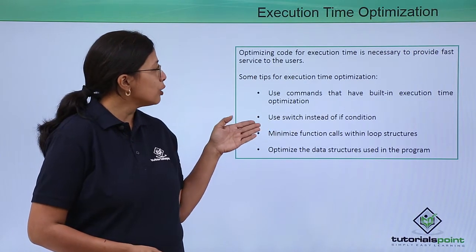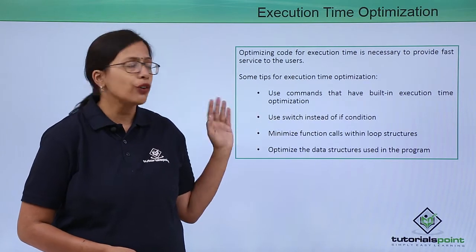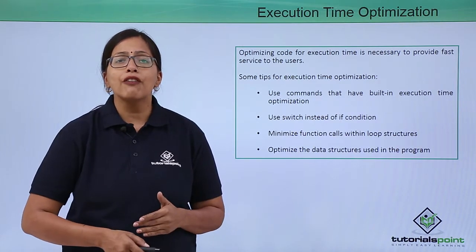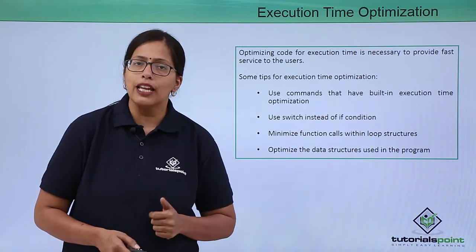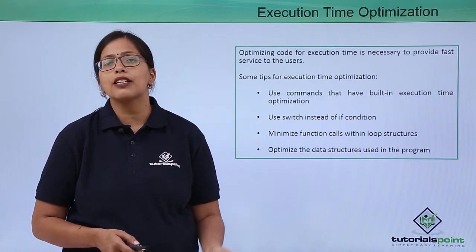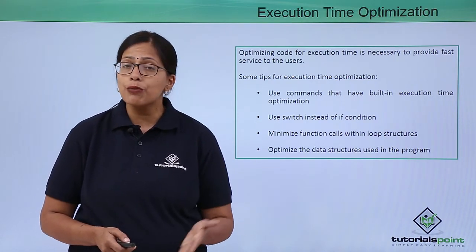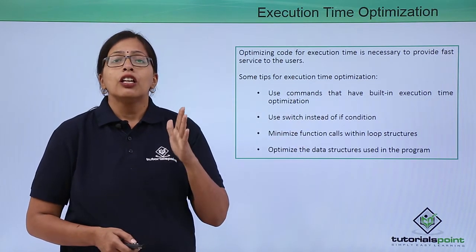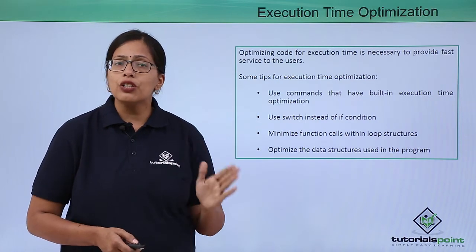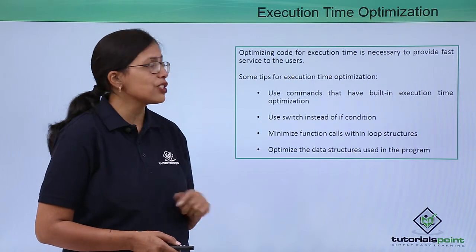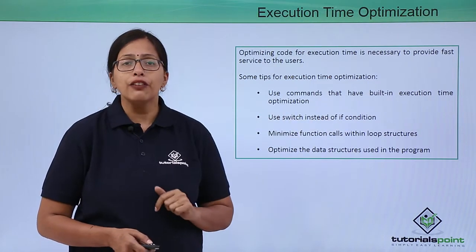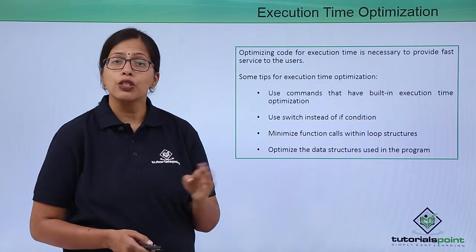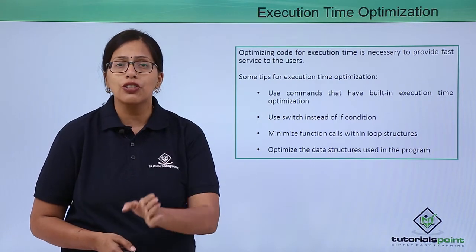To optimize code for execution time, first and foremost, most languages have commands with built-in optimization for execution time — you should learn and use those commands as much as possible. Use switch instead of if conditions: both are decision control statements, but implementing a switch is easier while if takes more execution time.